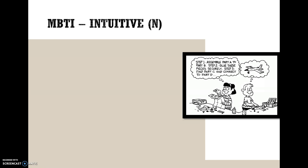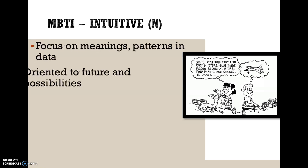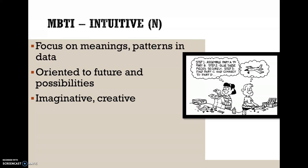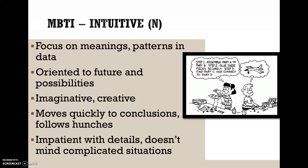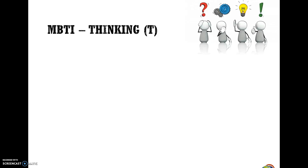The other option is N — Intuitive. N focuses on the meaning of patterns in data, is oriented to the future and possibilities, and is imaginative and creative. Intuitive types move quickly to conclusions, follow hunches, are impatient with details, and don't mind complicated situations. This is like the vice versa of the Sensing saying — they see the forest before the trees, seeing the whole picture.